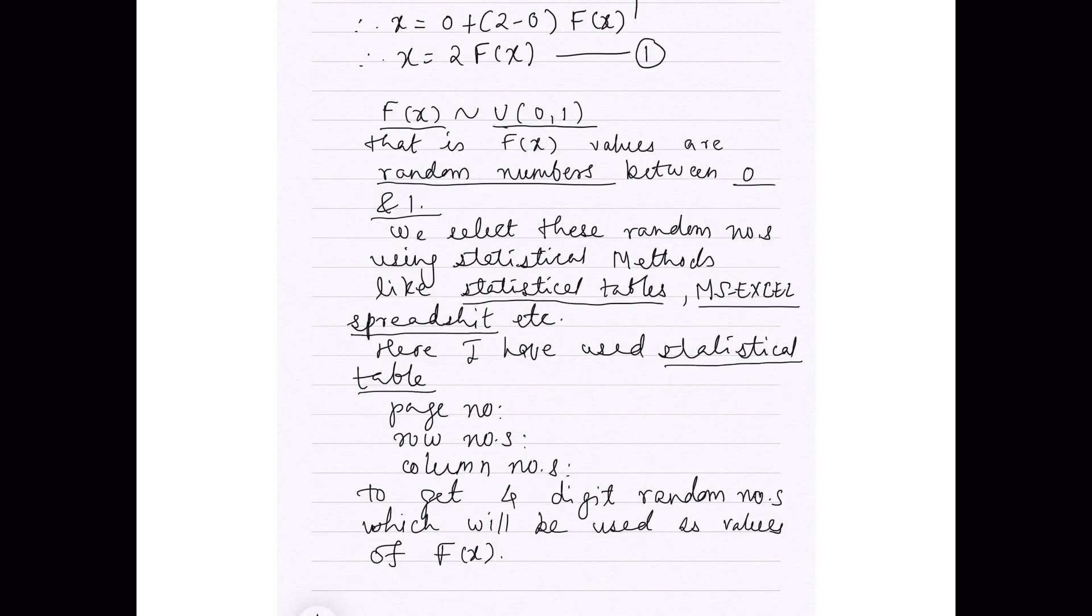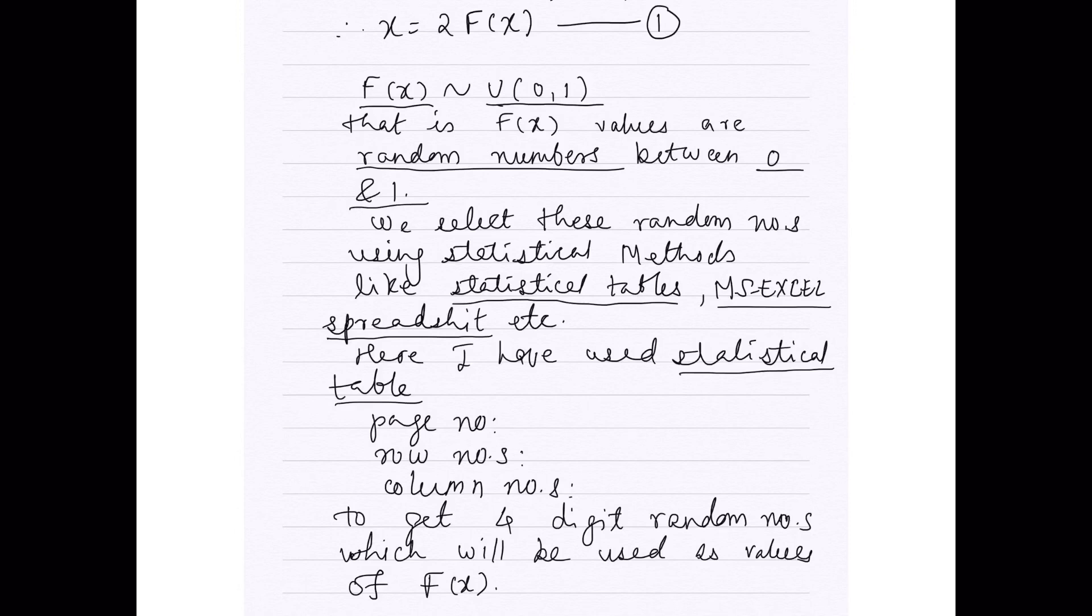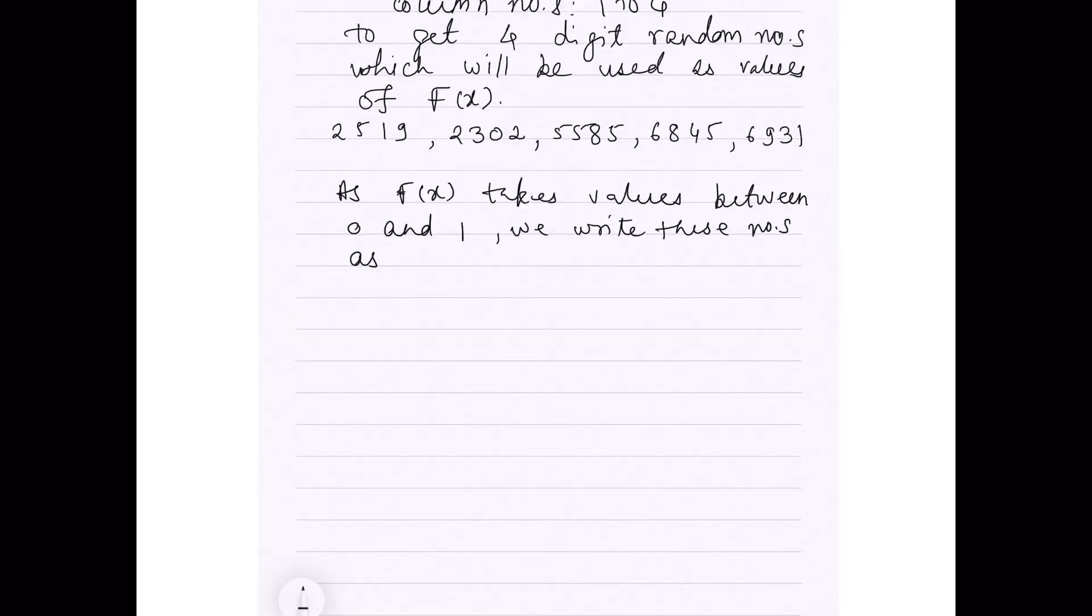Page number 23, row numbers 1 to 5 as we want 5 random numbers, and column numbers 1 to 4 as we want 4 digit numbers. To get these 4 digit numbers which will serve the purpose of values of F(x). Thus, we get the numbers from the statistical table as 2519, 2302, 5585, 6845, 6931.